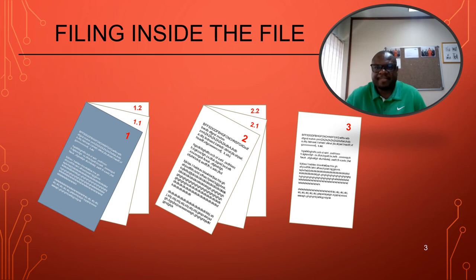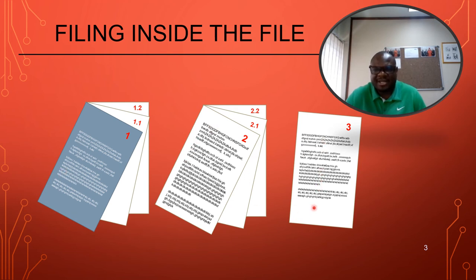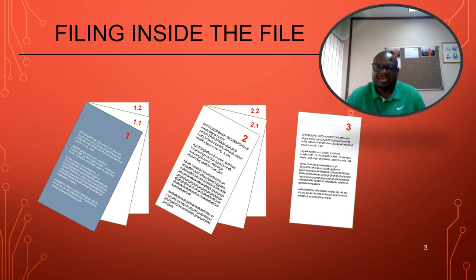Filing inside the file — this is a typical illustration of the arrangement of records inside a file. The first record received in the registry must be placed at the bottom. The next record goes on top of it, and the highest level holds the latest record — number three in this example — meaning it is the most recently submitted record.